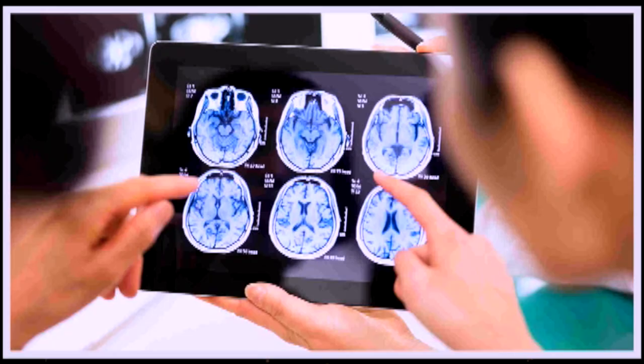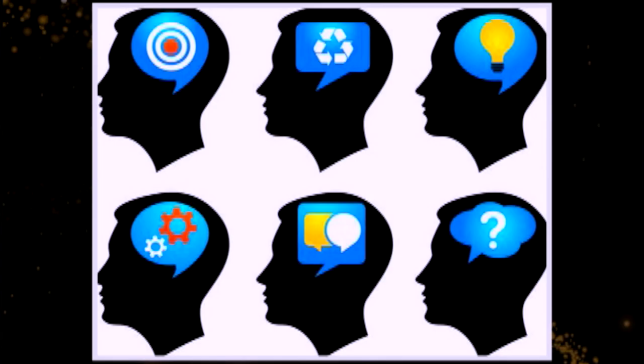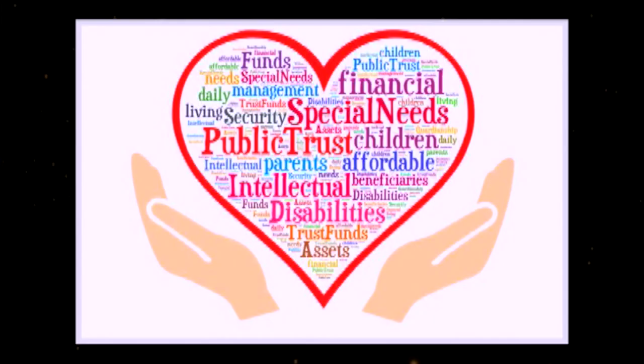Then, we move on to intellectual disability — the historical views, the causes, the levels of intellectual disability, prevention, the types of prevention, and what are the interventions. We cover all these aspects of intellectual disability.